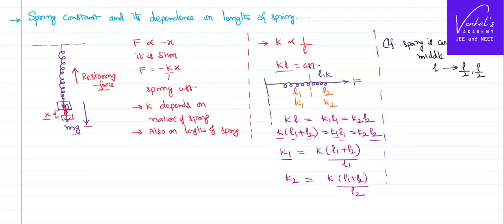Then, what will be the new spring constant of each piece? K1 is equal to K times (L1 plus L2), which is the total length L, divided by L1, which is L by 2. So what happens? K into L into 2 by L. L and L will cancel, so K1 is equal to 2K.